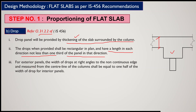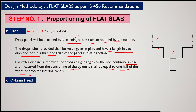The third point concerns exterior panels. In a continuous slab, some panels are interior and some are exterior. For exterior panels, the width of the drop at right angles to the non-continuous edge, measured from the center line of the column, shall be equal to one-half of the width of the drop for an interior panel. The design problem will make this clearer.